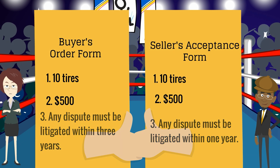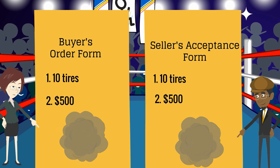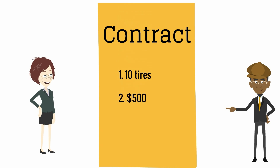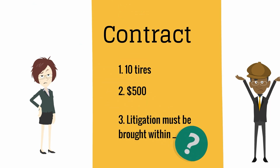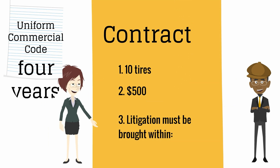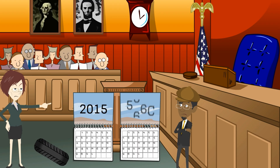Under the knockout rule, the contradictory terms are going to knock each other out — they're taken out of the contract. We have 10 tires for $500, but the contradictory litigation terms are eliminated. Our contract now has the terms the parties agreed on: 10 tires for $500. But how long do parties have to commence a lawsuit? The court knocked those contradictory terms out, so the Uniform Commercial Code will provide the missing terms. In this case, the UCC would tell us that the parties have four years to commence litigation — so if a problem is discovered in 2015, parties have until 2019 to file.